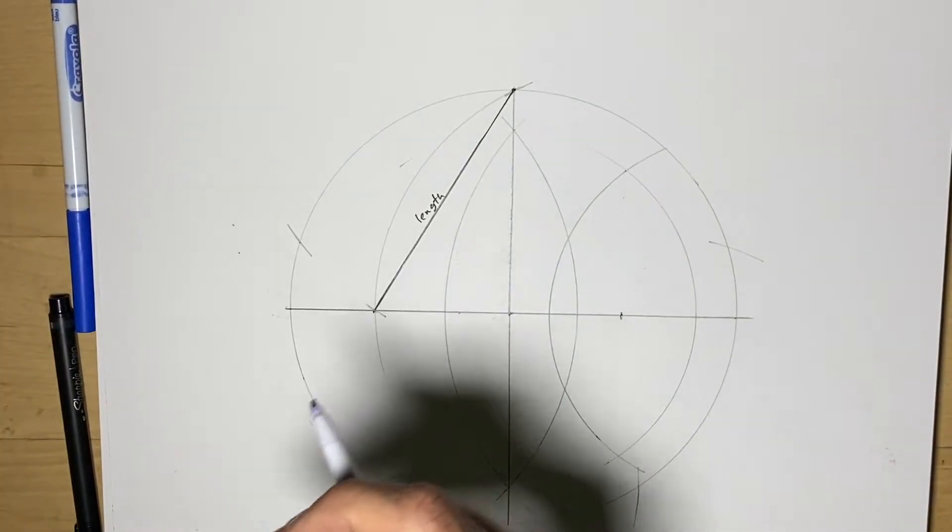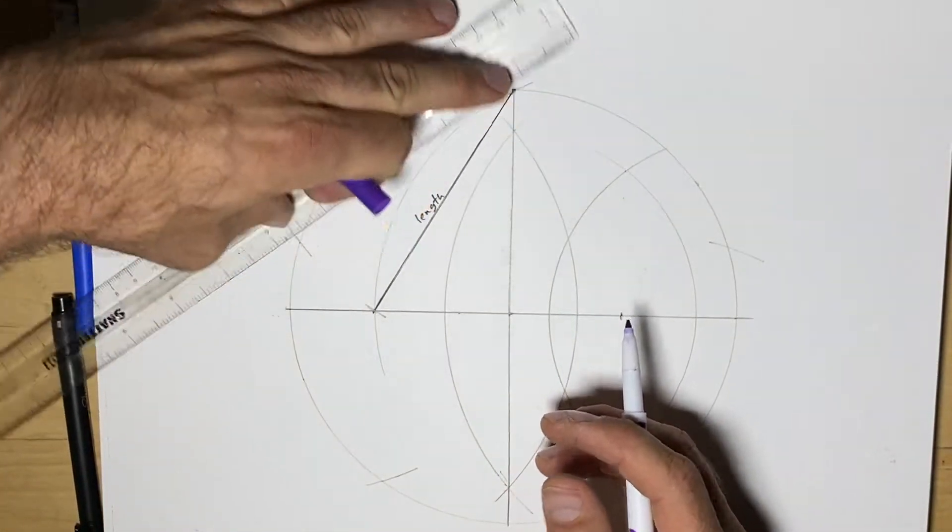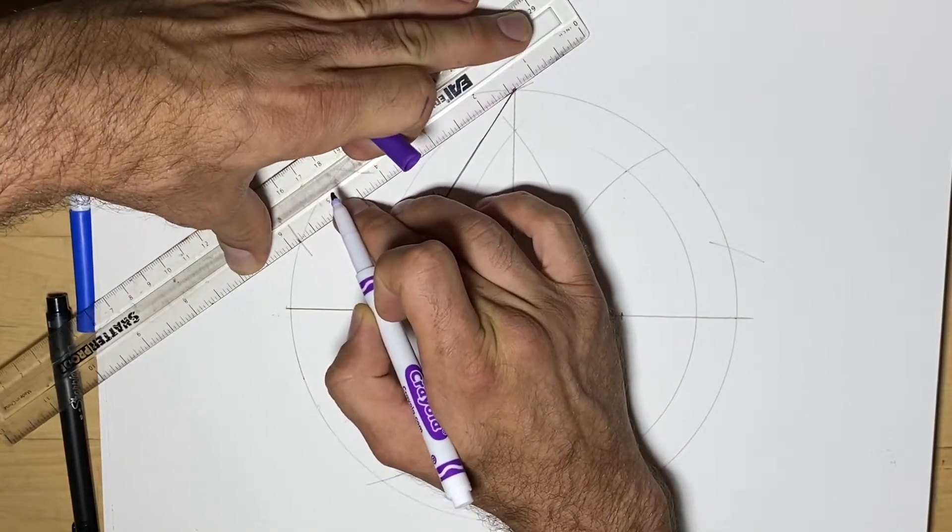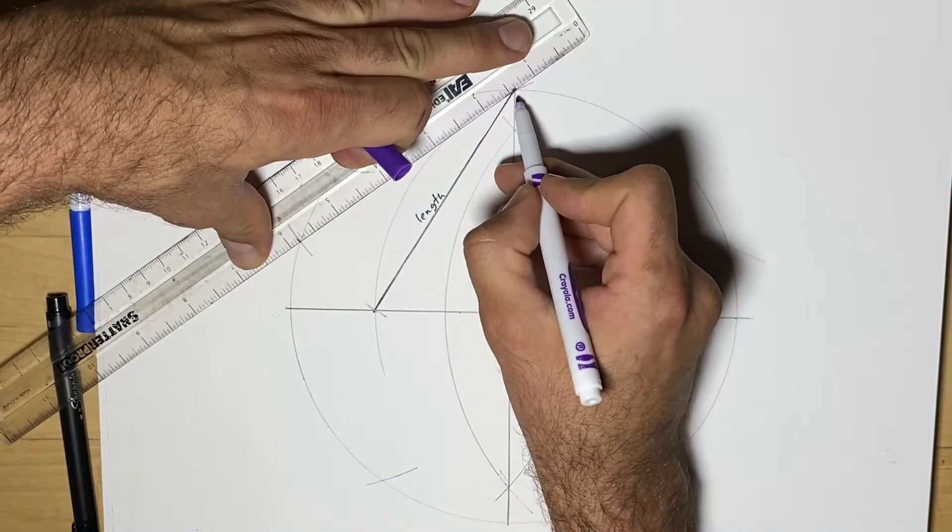I'm going to use my ruler and connect those spots. Again, you want to be a little bit more accurate than I am. I'm trying to do this for speed.